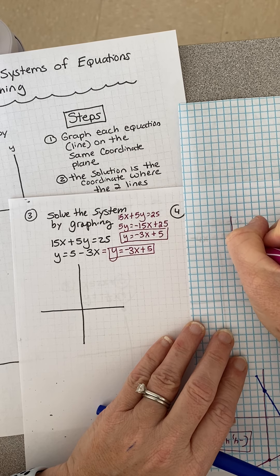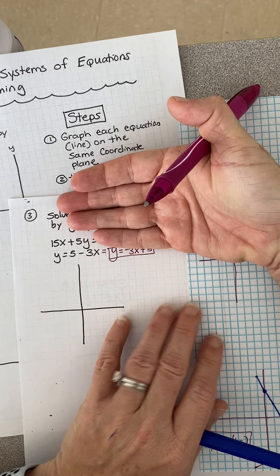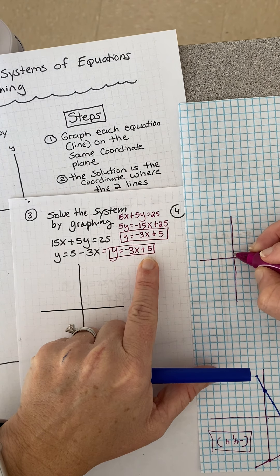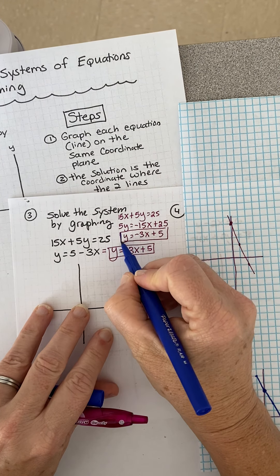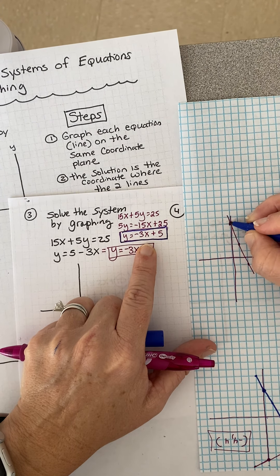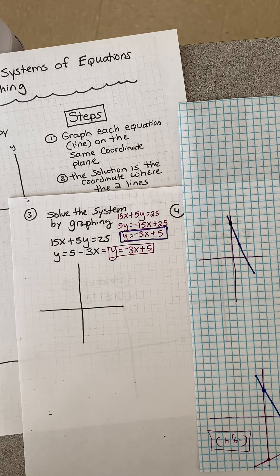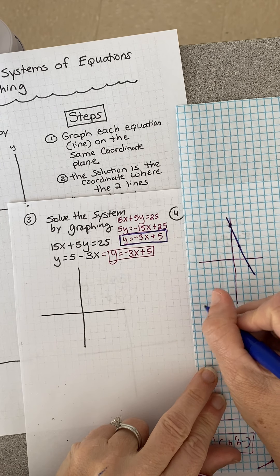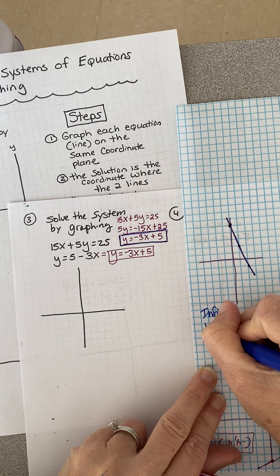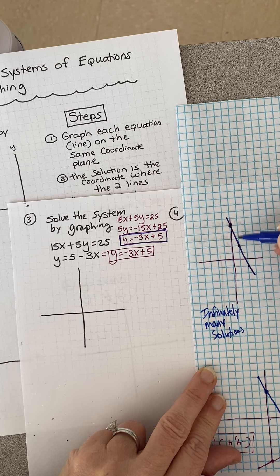Let me show you what that looks like. If I graph this - the y-intercept is 5 and the slope is negative 3 - I draw my line. Then I work out the other equation and get the same equation. When I start graphing it, I notice these lines are on top of each other - they're the same line. The part I care about is where they intersect, and now they're intersecting everywhere because they're on top of each other. So the answer is infinitely many solutions - they intersect everywhere.